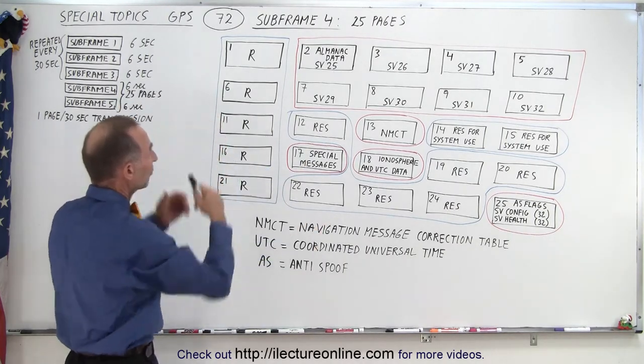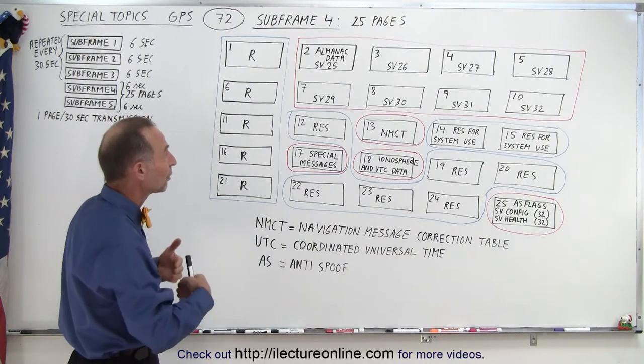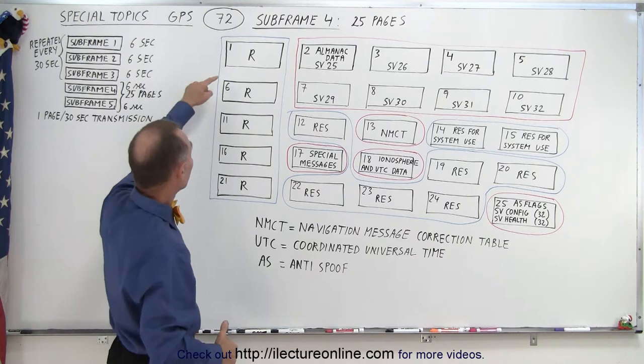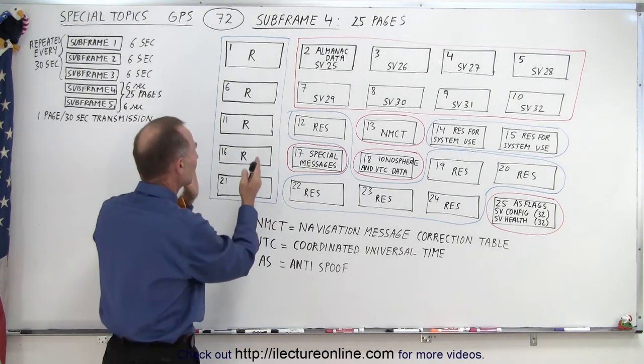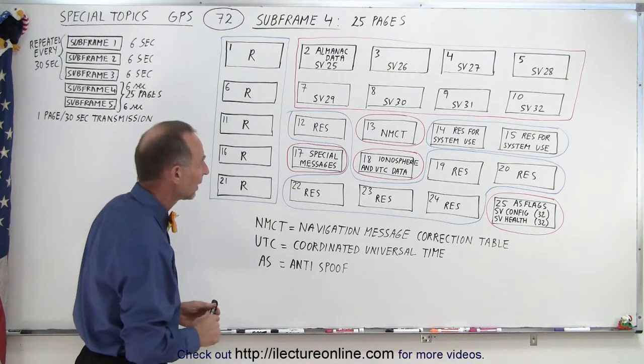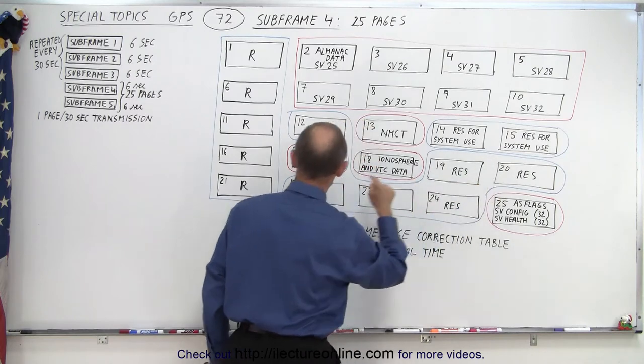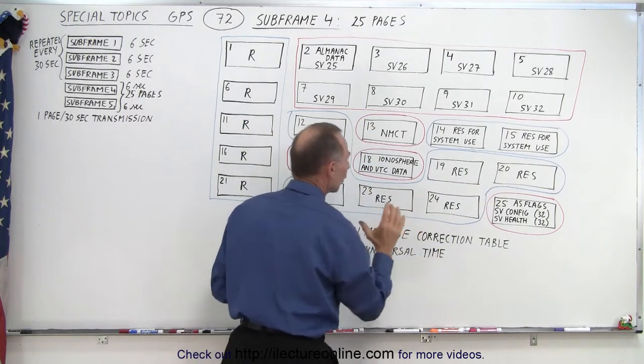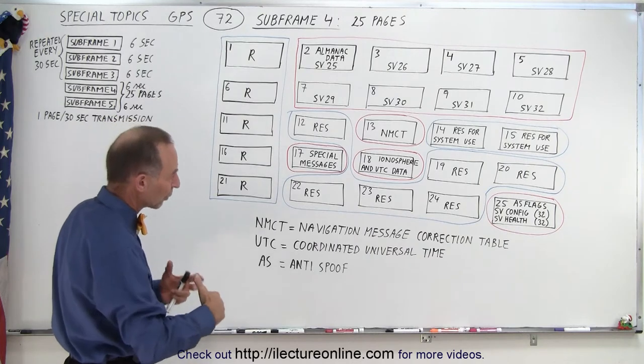So here are the 25 pages of subframe 4. Now it turns out a number of these pages are reserved. So you can see that page 1, 6, 11, 16, and 21 is a block of pages reserved for a specific purpose. Then we have another block of 6, 12, 19, 20, 22, 23, 24. Those six pages are also reserved for a different purpose.